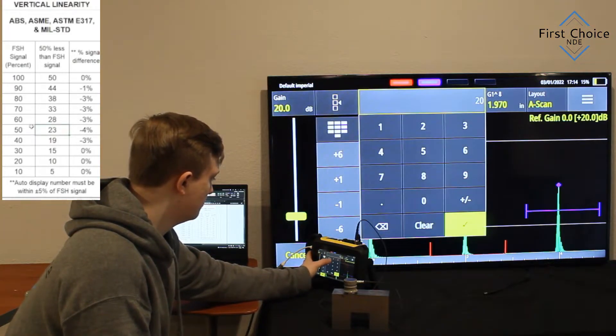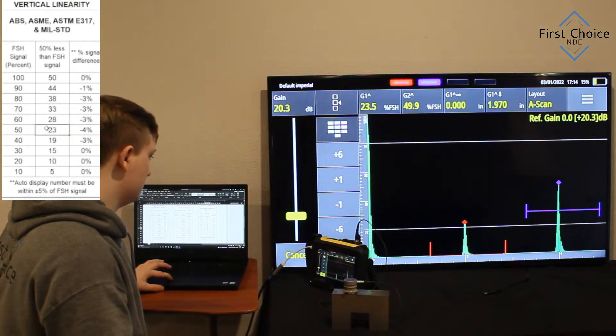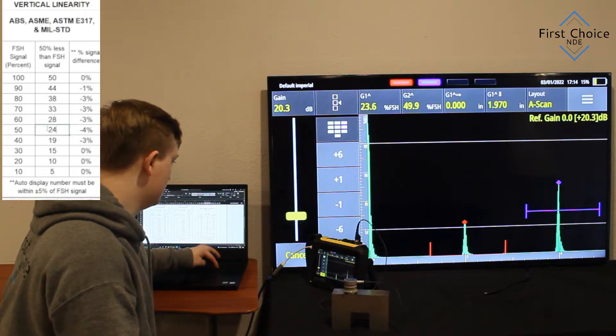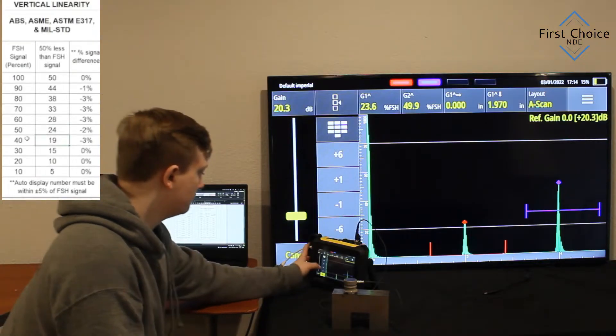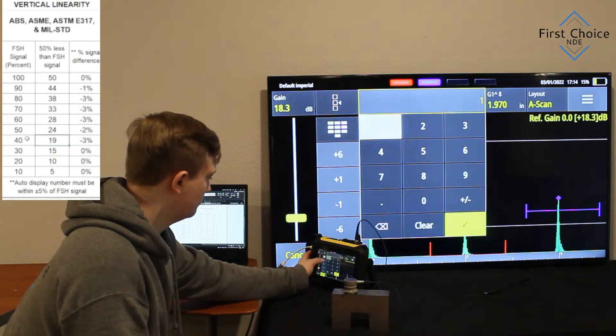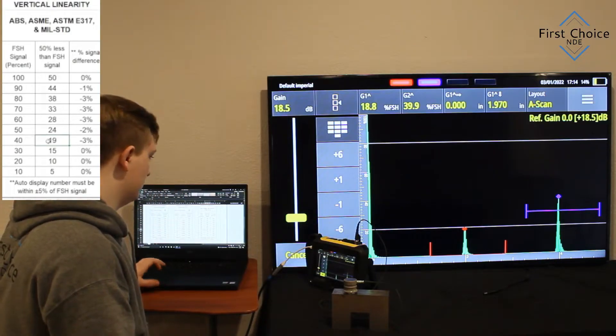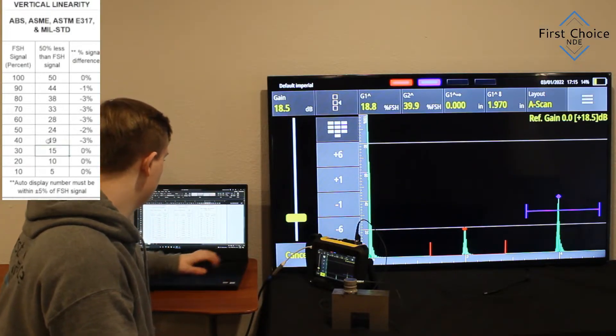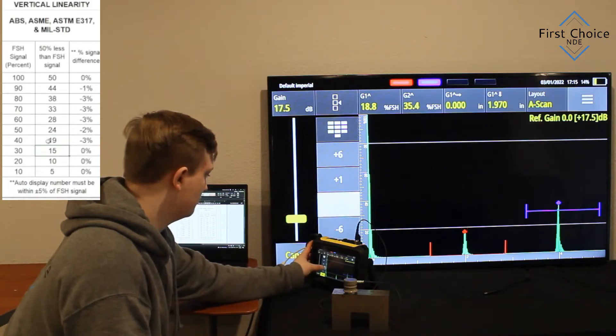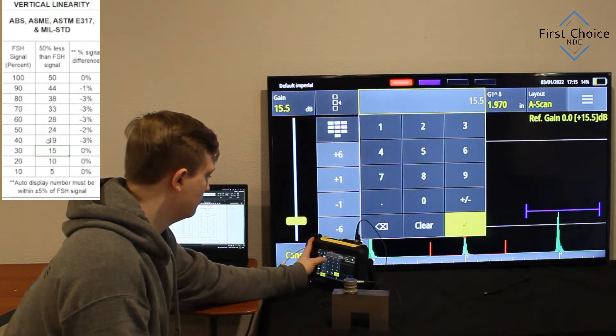Alright, so we did 60% on the right signal, and that ended up being 28%. Another minus 3%. Looks like we have 50%, 49.9. Signal on the left is 23.6 roundup, 24. That's a minus 2% differential. Lowering the dB again, 40% on the right signal, 19% on the left one, that's a minus 3%. So we're still, so far, every category is within tolerance.